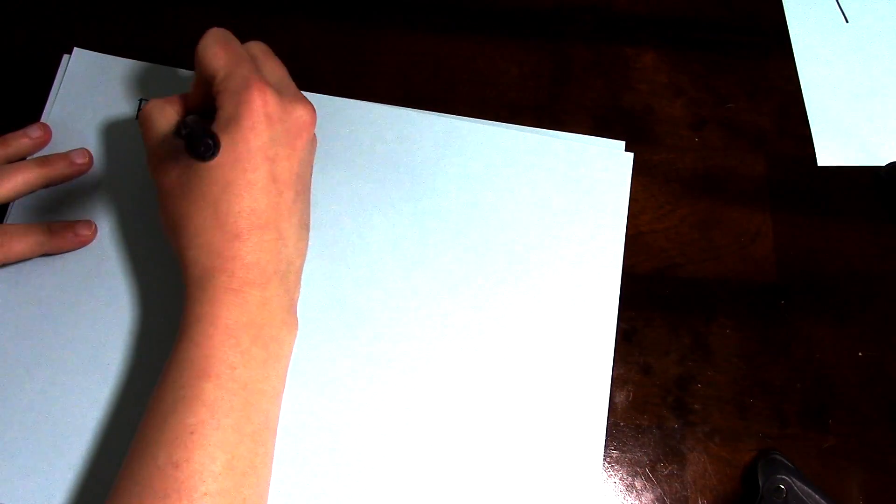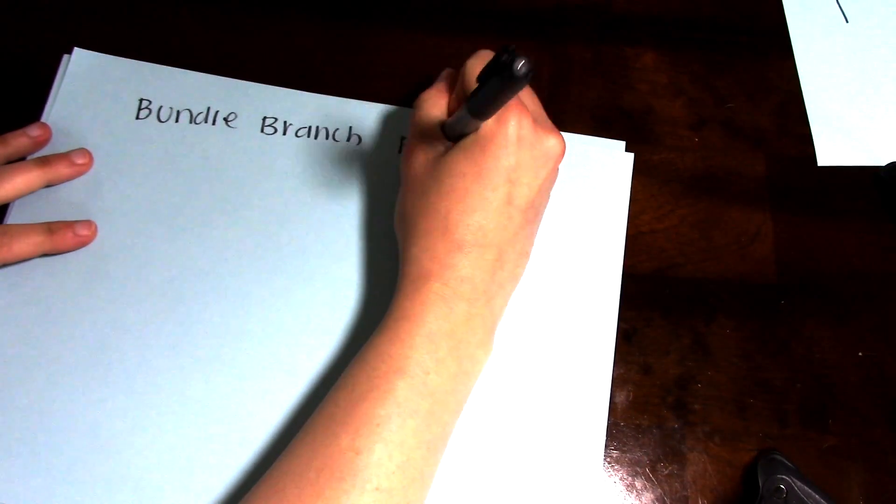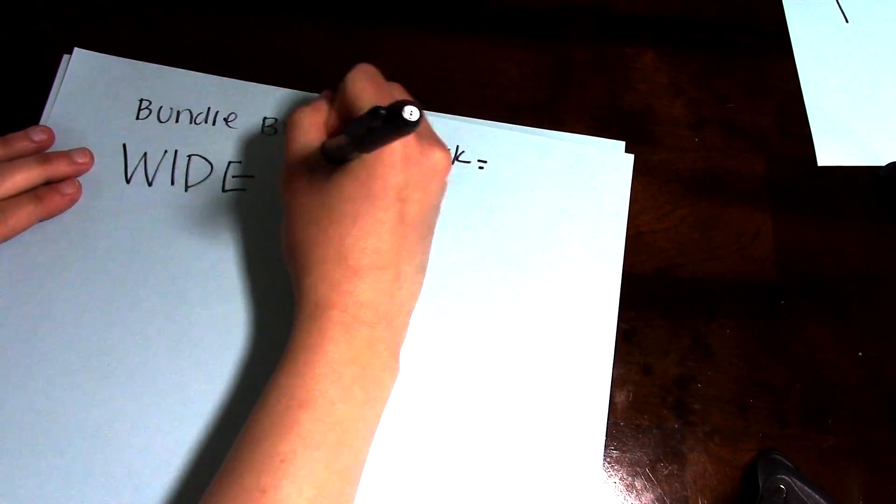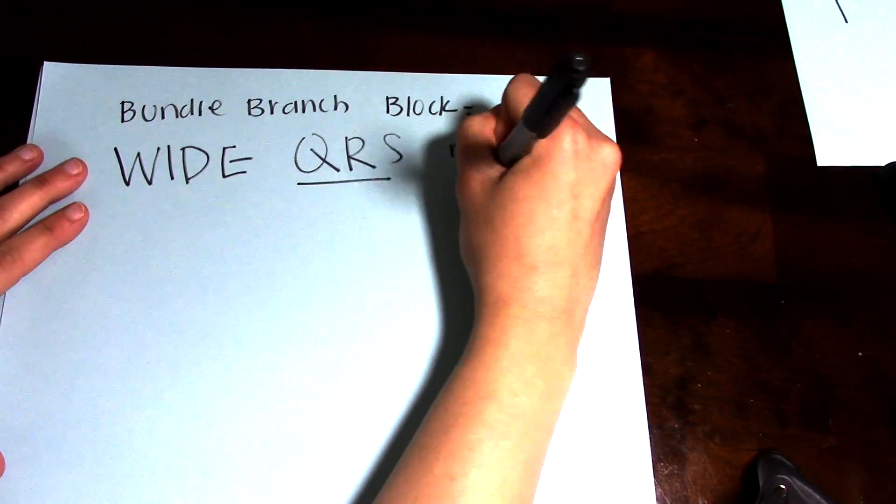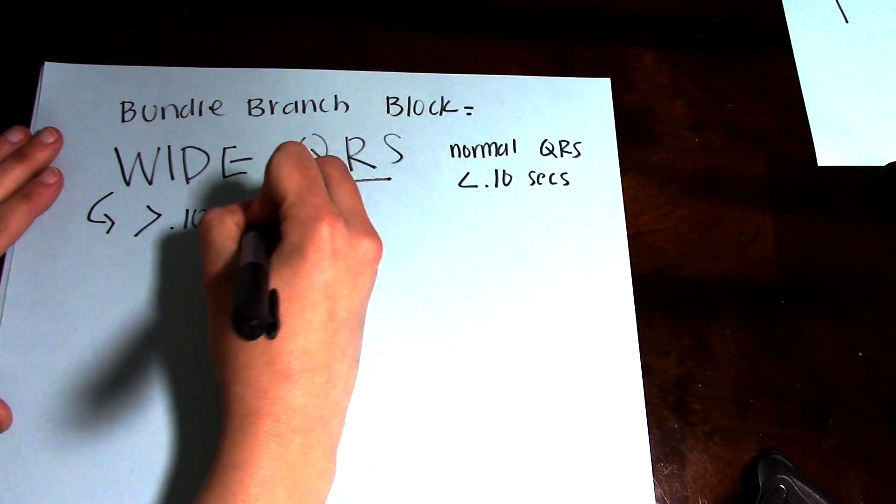Bundle branch blocks are very simple and they mean that you have a wide QRS. Now a normal QRS is less than 0.10 seconds, so this means that your QRS is going to be greater than 0.10 seconds.